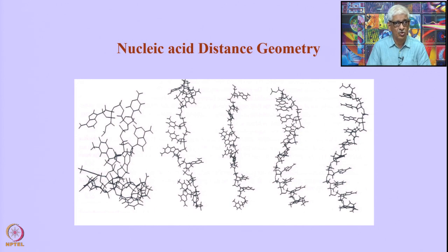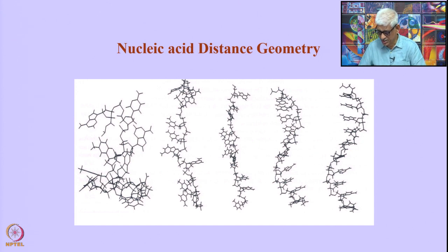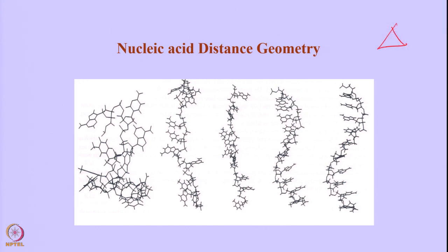This is done by an algorithm called distance geometry. The distance geometry algorithm takes a certain set of distances and optimizes the structure to satisfy your distance constraints. To illustrate this: if I have a triangle with three atoms, I have three distances — if I define those three distances, the triangle is uniquely defined. Similarly, if I have a quadrilateral with four distances defined, the quadrilateral is uniquely defined. In the same manner, to define the structure of an entire molecule, I must have a certain number of distances which will define the structure.